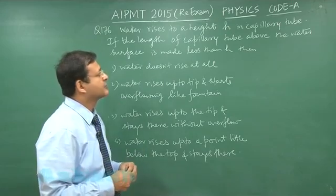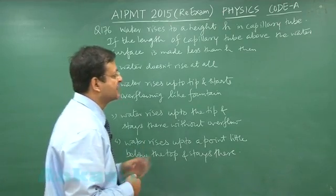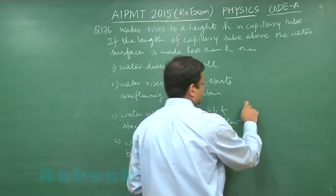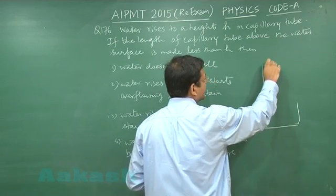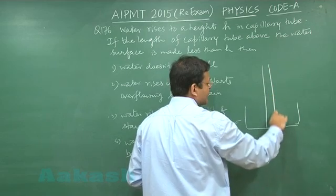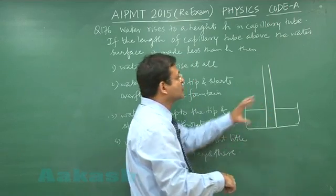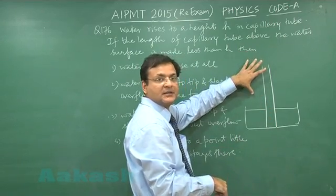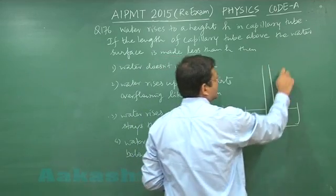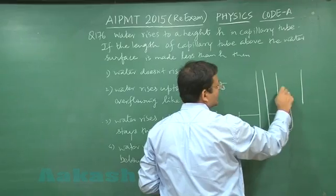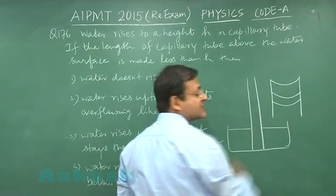This is a standard question on capillary rise. It has always been taught that if this is the water surface and the capillary is kept here, and the capillary rise goes beyond the height of the capillary, then at the top the picture will be something like this — water will be rising like this and at the top it will be reaching this way.